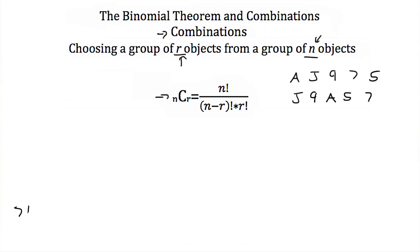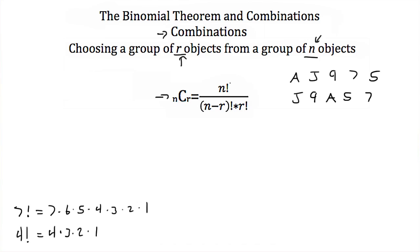If you're not familiar with the factorial sign — this exclamation point — seven factorial equals seven times six times five times four times three times two times one. Four factorial would be four times three times two times one. Whatever number is followed by the factorial symbol, you multiply it by every integer less than that number all the way down to one. A special rule: zero factorial is always equal to one.